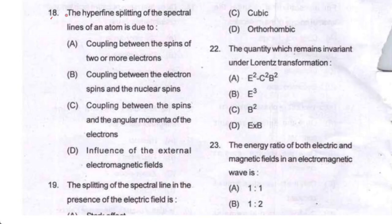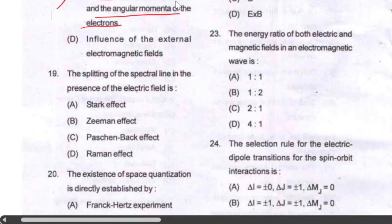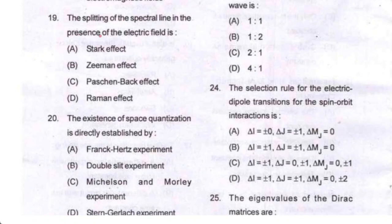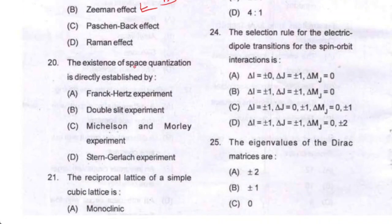Question number eighteen: the hyperfine splitting of the spectral lines of an atom is due to coupling between the spins and the angular momentum of the electrons. So option C is your correct option. Question number nineteen: the splitting of spectral lines in the presence of an electric field is called the Stark effect, and in the presence of a magnetic field it is the Zeeman effect.